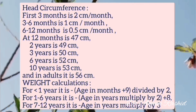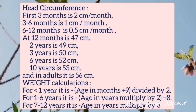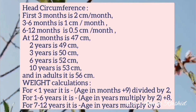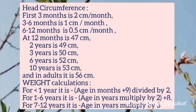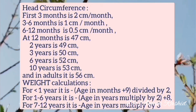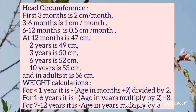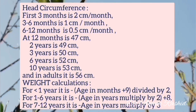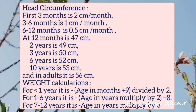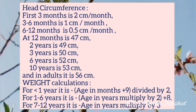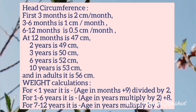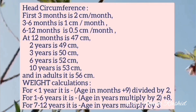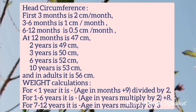Head circumference growth rate: at 3 to 6 months of age it is 1 cm per month; at 6 to 12 months it is 0.5 cm per month. At 12 months of age it is 47 cm, at two years it is 49 cm, at three years 50 cm, at six years 52 cm, and at 10 years of age it is 53 cm.